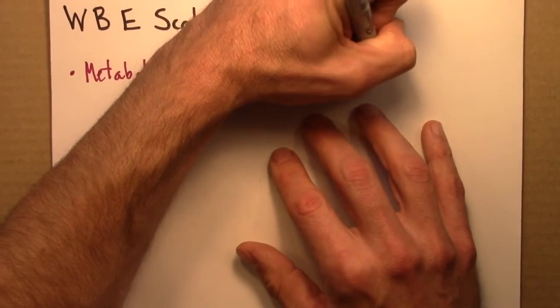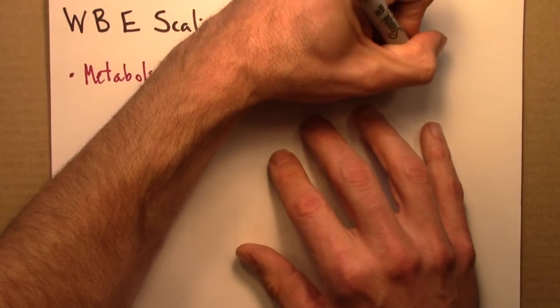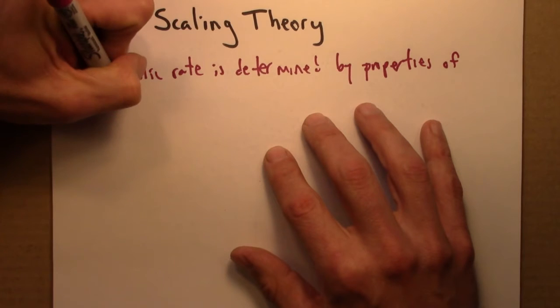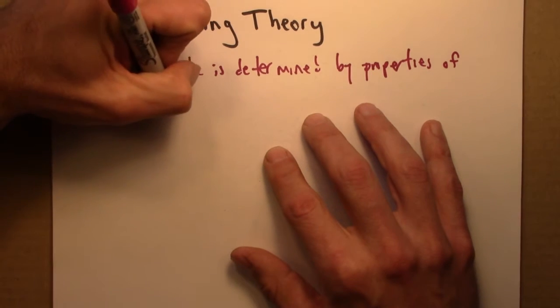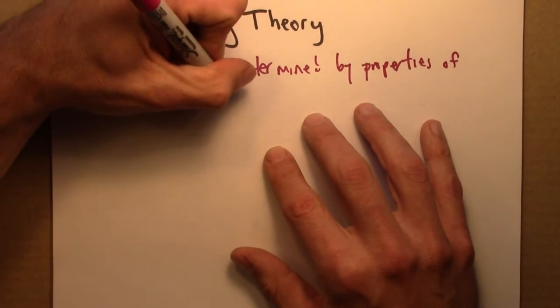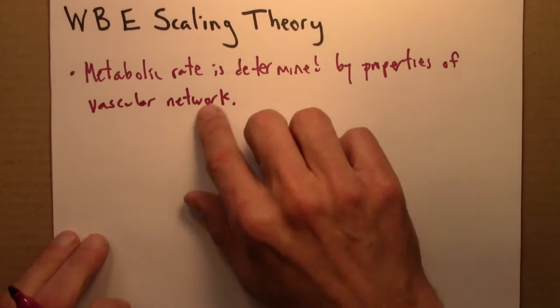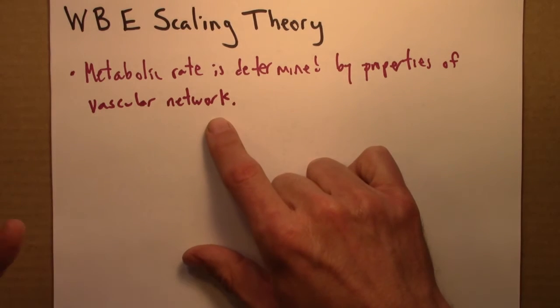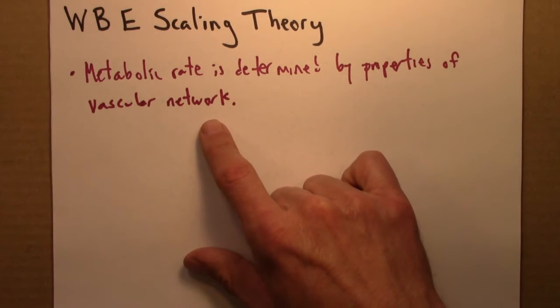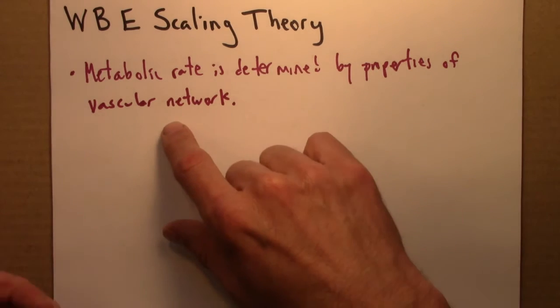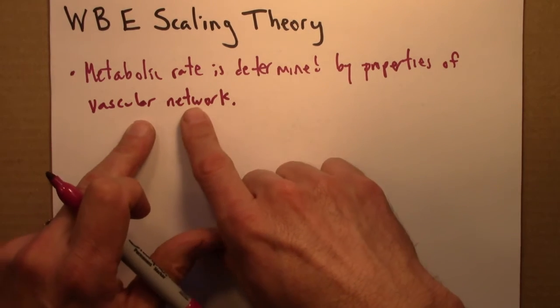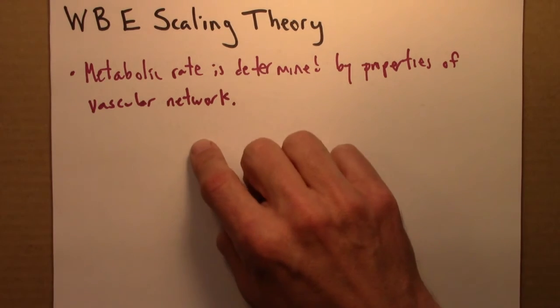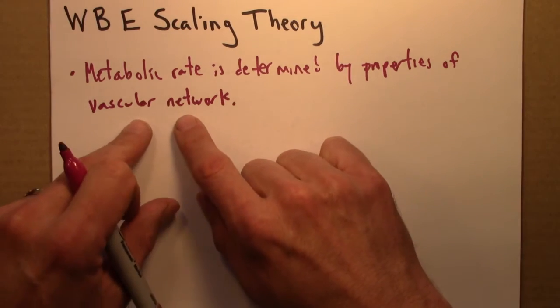The vascular network carries blood to cells and delivers oxygen so those cells can respire and do things that cells do. This same network also carries away waste products from cells, carbon dioxide and other things. That's what sets the metabolic rate for an organism.